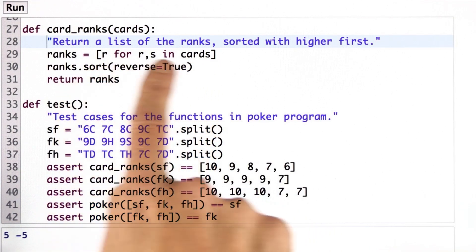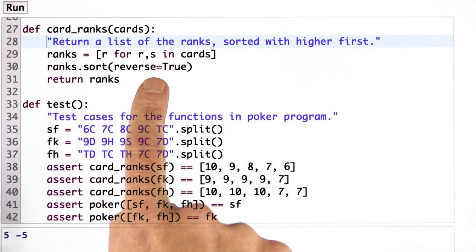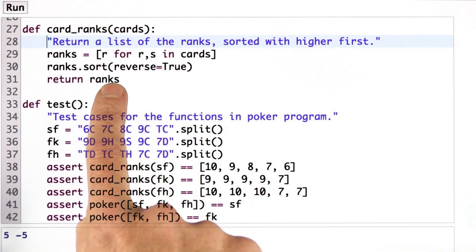So ranks is the list of ranks. Then we sorted it and we said we want to reverse sort so that the higher comes first rather than the lower, and then we return the ranks.